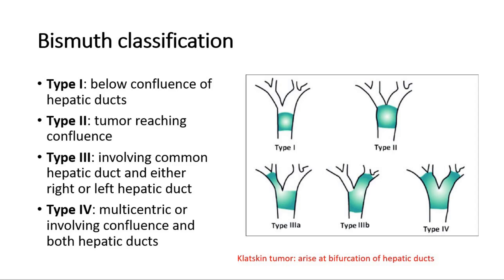Type 2 is the tumor reaching the confluence of the hepatic ducts. Type 3 is divided into 3A and 3B. Overall, it involves the common hepatic duct, and the difference is whether it involves the right hepatic duct (3A) or the left hepatic duct (3B). Type 4 is a multi-centric tumor, or one that involves the confluence together with both the right and left hepatic ducts.